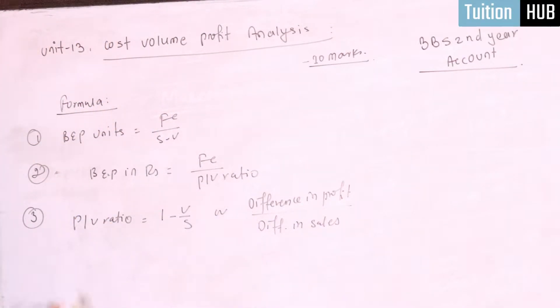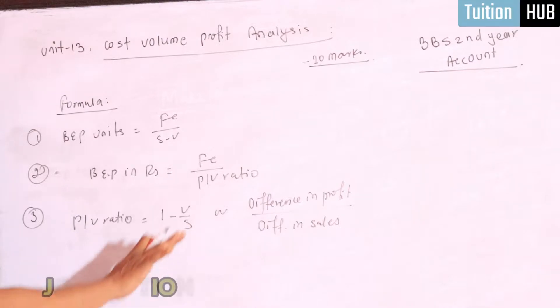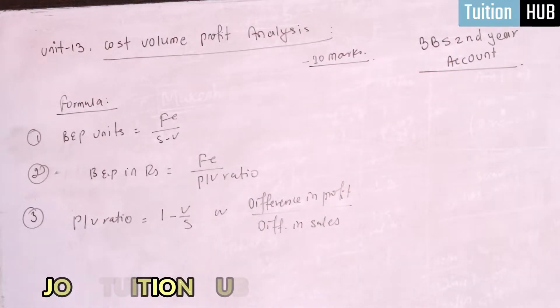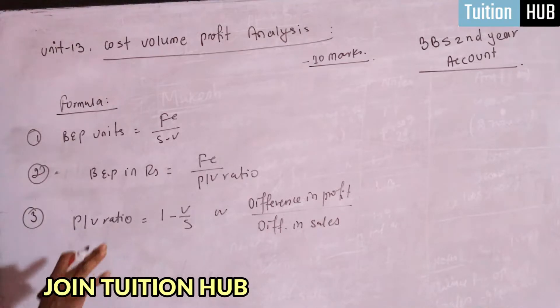What is PV ratio? PV ratio is 1 minus V by S, or difference in profit upon difference in sales.